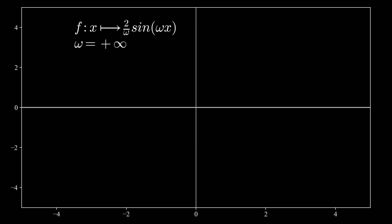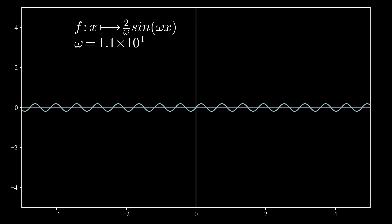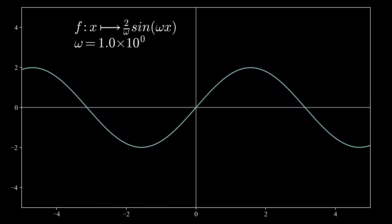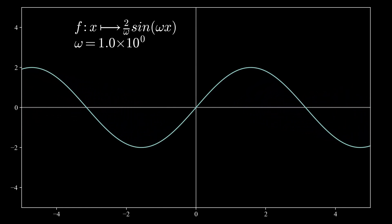Now, slowly, we are going to decrease the value of omega until we arrive at omega equal to 1. In that case, we have the simple function 2 multiplied by sine of x, which has an amplitude of 2 and a slope equal to 2 at the origin.